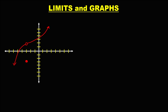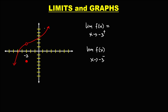For this graph, we evaluate the limit at negative 3. For the right side limit, x approaches negative 3 from the right, and the limit is equal to positive 2. For the left side limit, x approaches negative 3 from the left, and the limit is also equal to positive 2.